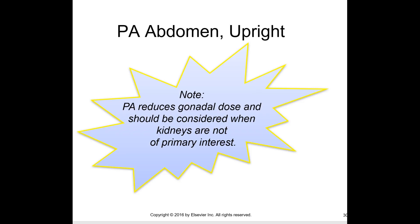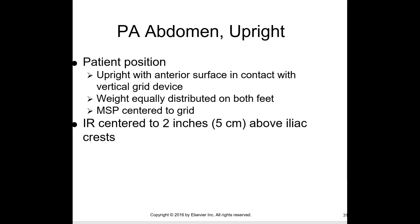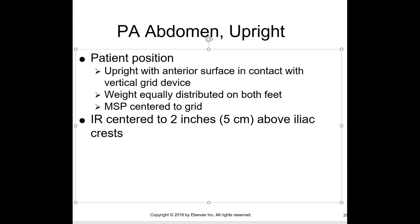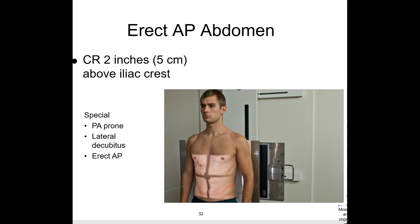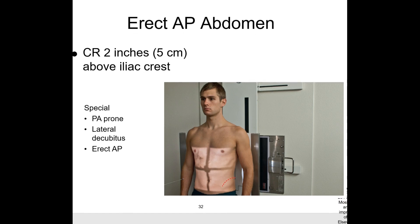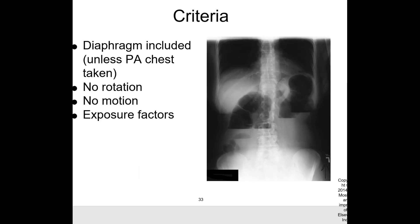For the upright abdomen, patient position is upright with the anterior surface in contact with the vertical grid, weight equally distributed in both feet, MSP centered to the grid, and the IR centered two inches above the iliac crest. This is done to include the diaphragm. As a rule of thumb, the top of the film is right about at the level of the armpit.